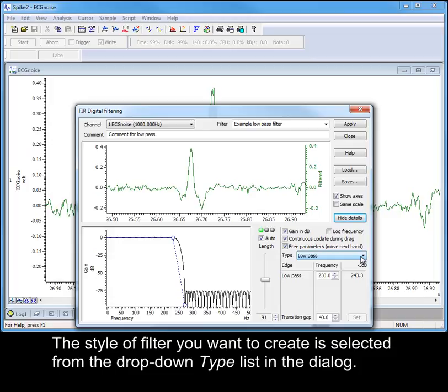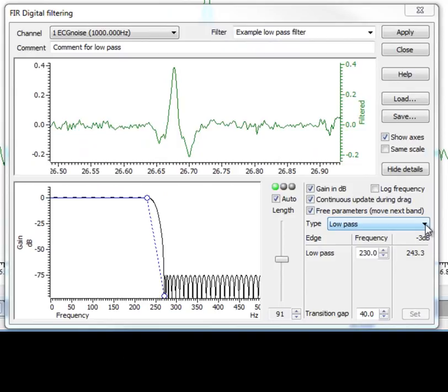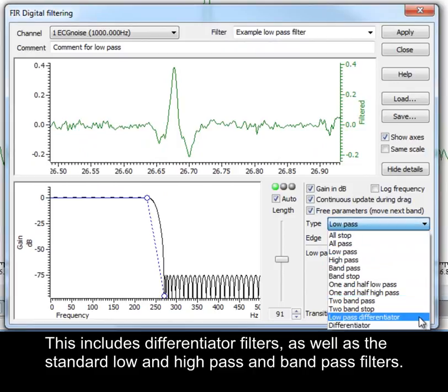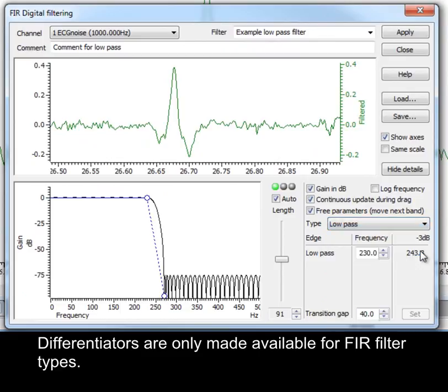The style of filter you want to create is selected from the drop-down Type list in the dialogue. This includes differentiator filters, as well as the standard low and high pass and bandpass filters. Differentiators are only made available for FIR filter types.